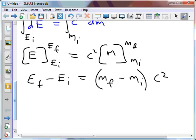But what that really means is the change in energy is equal to the change in mass multiplied by the speed of light squared. And that is E equals mc squared.